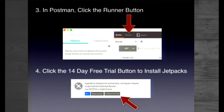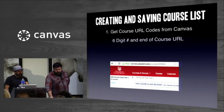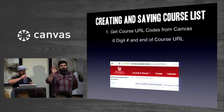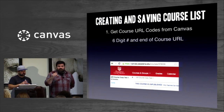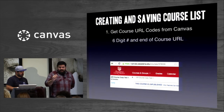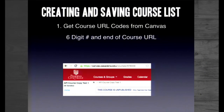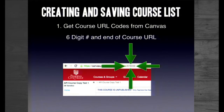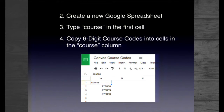Postman has a powerful upgrade called JetPacks, which is only $9 and free for a 14-day trial. We think it's totally worth the $9. The JetPacks add-on lets you perform one action over a number of different iterations. For instance, we're going to copy the content of a course over and over again to a number of different sections. In order to use the Canvas API to talk to a specific course, you need the unique course identifier, which you can find at the end of the URL of every Canvas course.